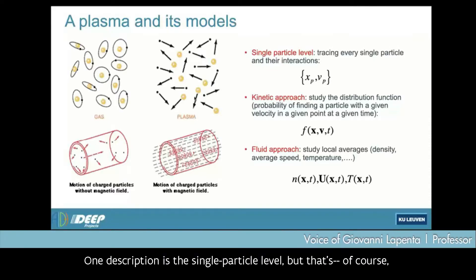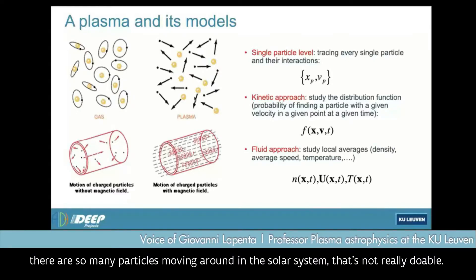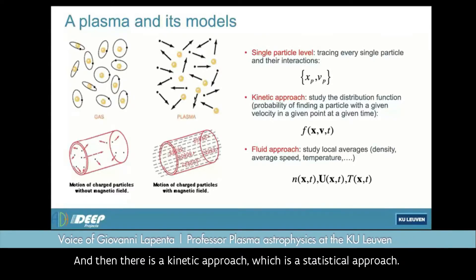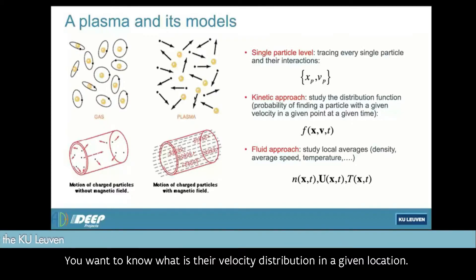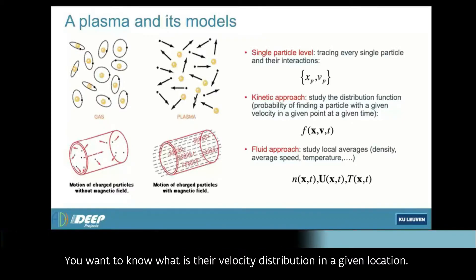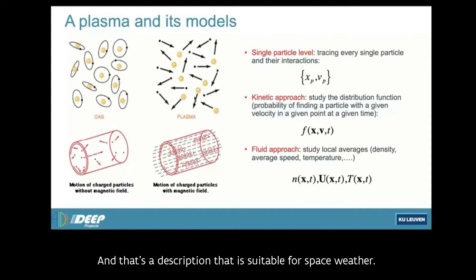One description is a single particle level, but there are so many particles moving around in the solar system that's not really doable. And then there is a kinetic approach, which is a statistical approach. You describe the particles in the solar system statistically. You want to know what is their velocity distribution in a given location. That's a description that is suitable for space weather. And finally, the fluid approach is the continuum approach, where you study the solar wind as if it was a flow of water with the same model.